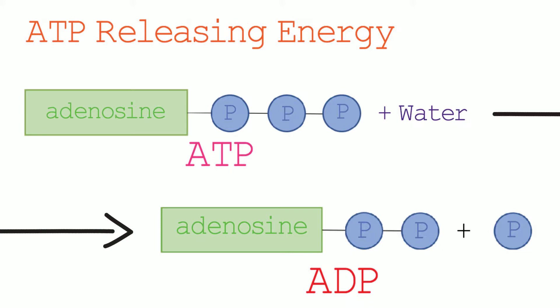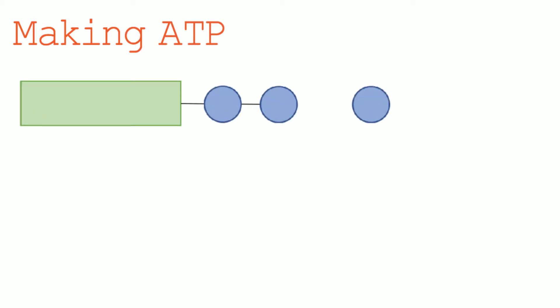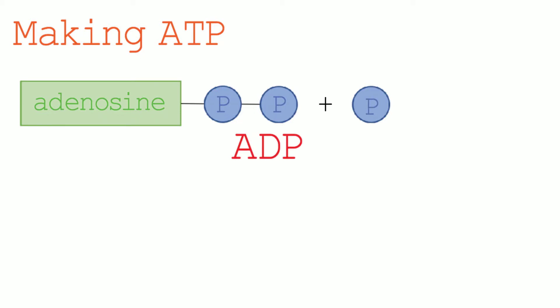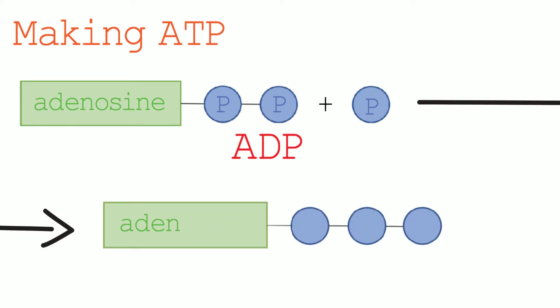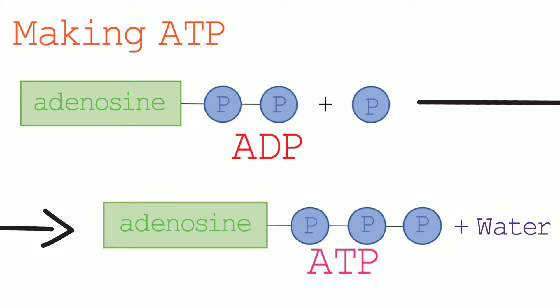So that's the breaking down of ATP, but how can we produce ATP? We produce ATP by recharging ADP. The recharging process works by using energy that is produced during respiration to add a phosphate molecule back onto ADP, thus creating ATP. The recharging process also creates water.